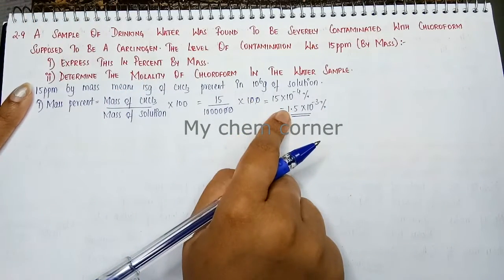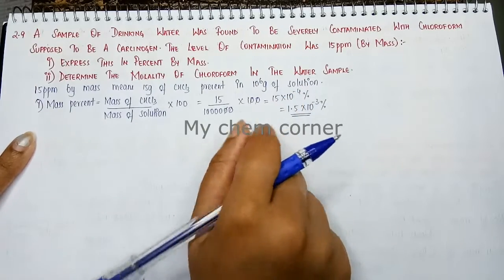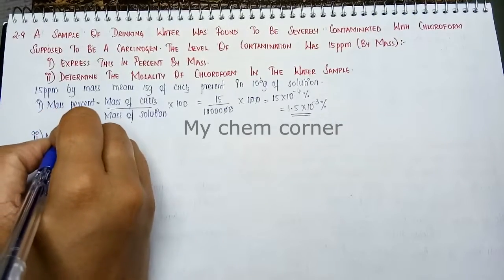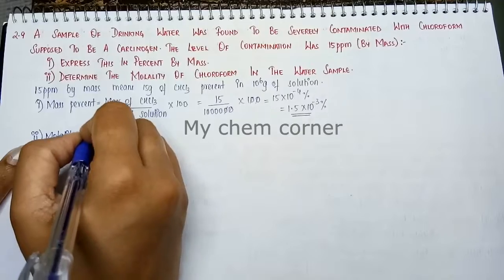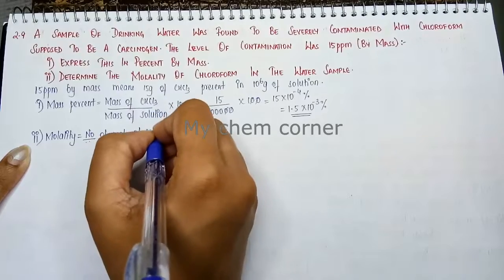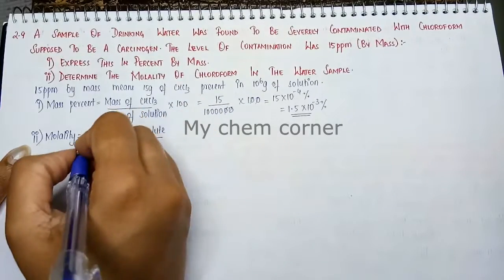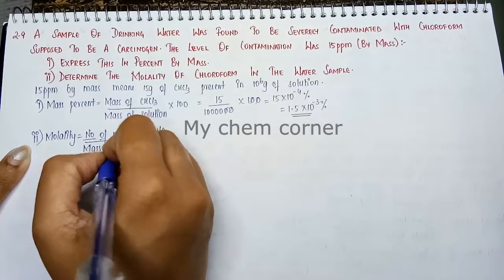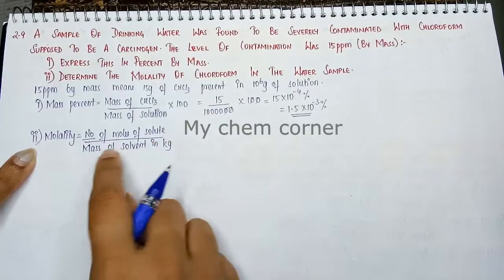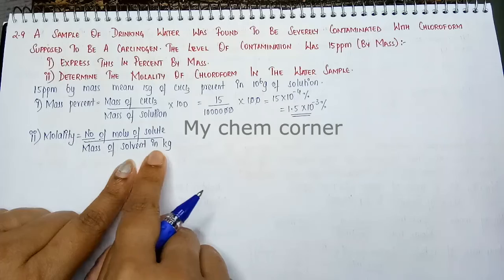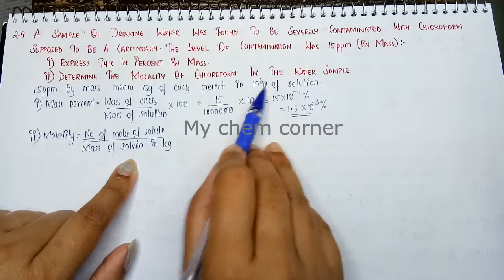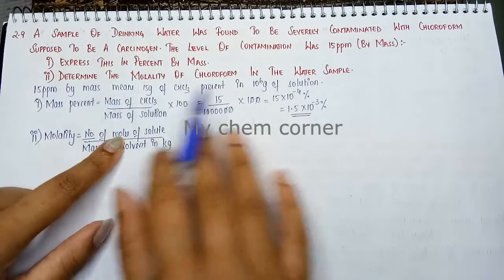The second one is to calculate the molality of chloroform. The formula for molality is: number of moles of solute divided by mass of solvent in kg. The mass of solvent in kg is not given directly — instead we have mass of solution. So we need to calculate it step by step. The number of moles is also not given.